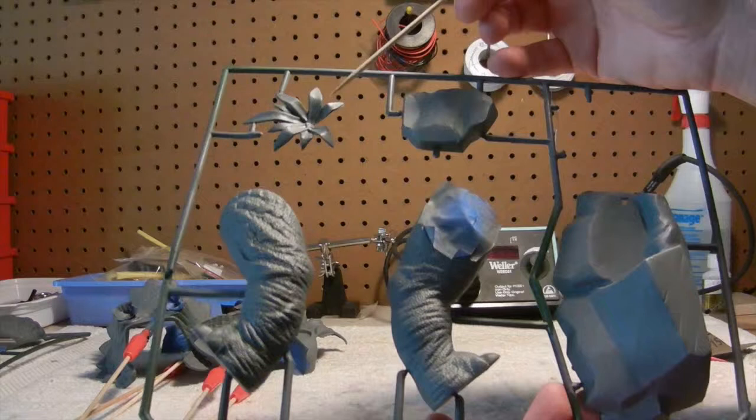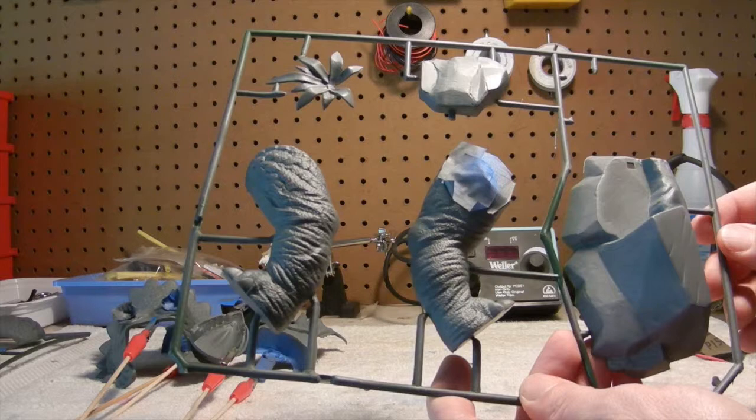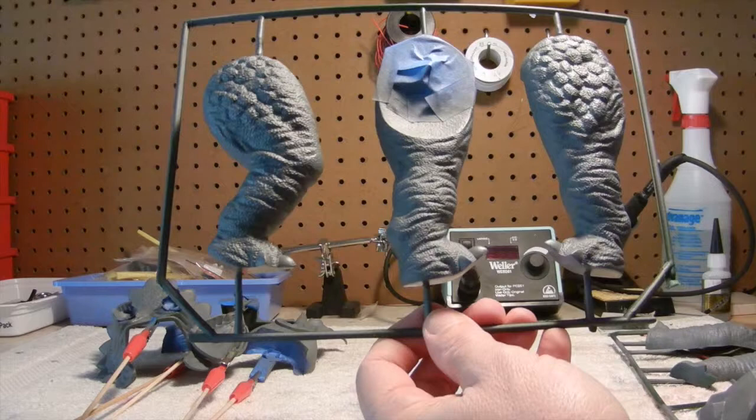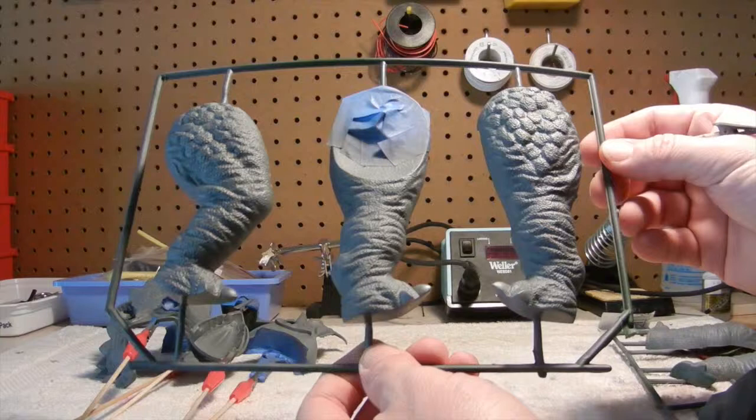And on to the next one here, we have the larger legs that go on the back rear end of Trike. Once again, as you can see here, very nicely detailed.